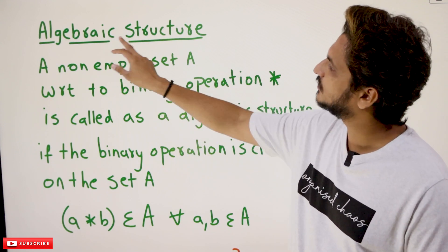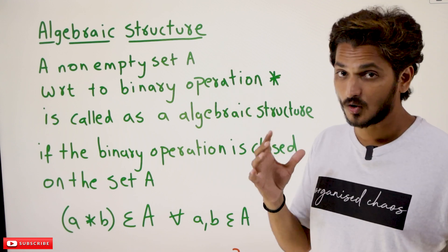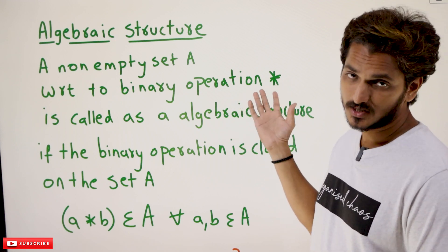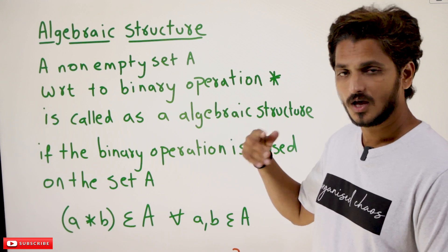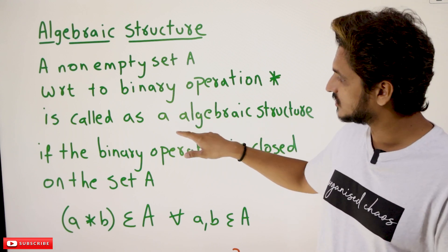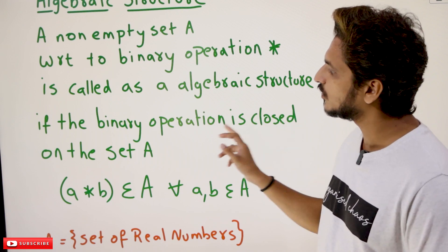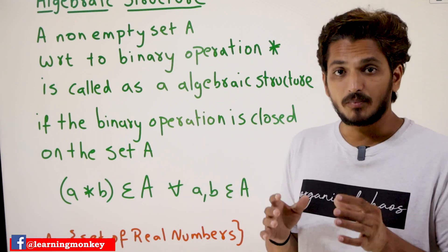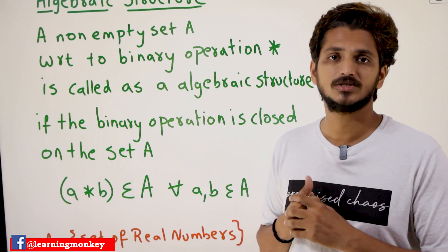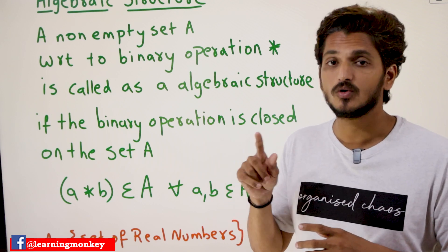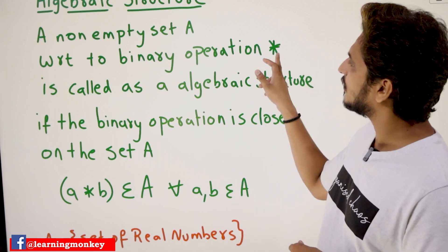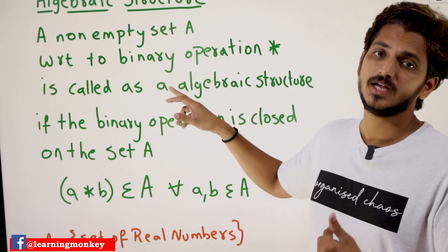Let's understand the definition of algebraic structure. A non-empty set A with respect to the binary operation star — you can take any binary operation, here we are taking it as star, you may take plus or whatever binary operation you need — is called an algebraic structure when the binary operation is closed on the set A. If the binary operation satisfies the closure property, then we say it is an algebraic structure.